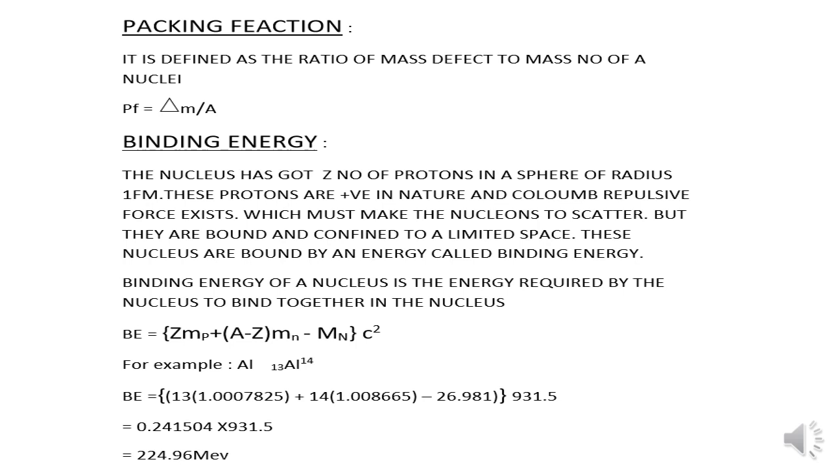Binding energy of a nucleus is defined as the energy required by the nucleus to bind together within the nucleus. It is given by the formula Z Mp plus A minus Z Mn minus Mn C square. For example, let us take aluminum. Aluminum has got mass number 14 and atomic number 13. When we substitute mass of protons in the binding energy formula, we get binding energy to be equal to 224.96 MeV.